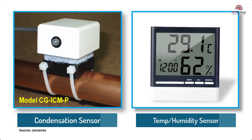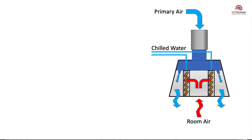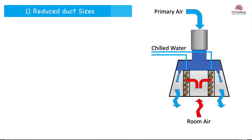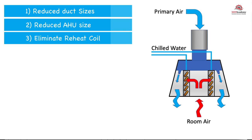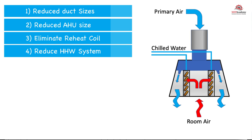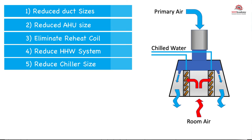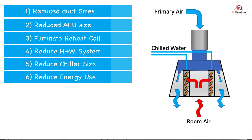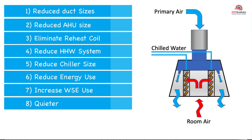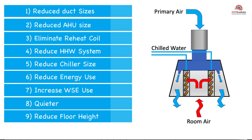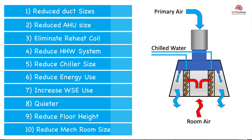Benefits of using active chilled beams: (1) Reduce size of main supply ducts; (2) Reduce size of air handler and/or central fans; (3) Elimination of reheat coils at each zone; (4) Reduce size of heating hot water system; (5) Reduce chiller size; (6) Reduction in energy use; (7) Increased time of use for waterside economizers; (8) Quieter than conventional systems; (9) Reduction in floor-to-floor heights; (10) Reduction in mechanical room size.